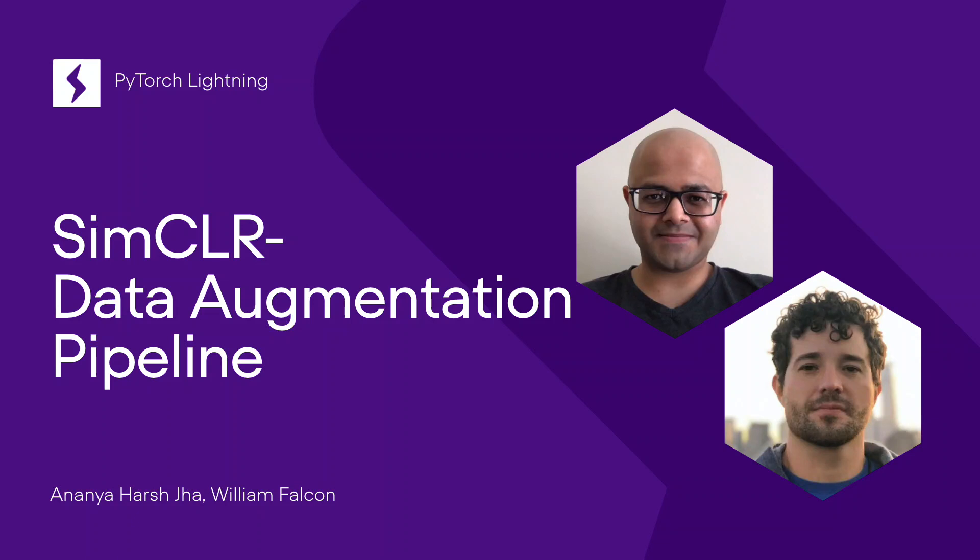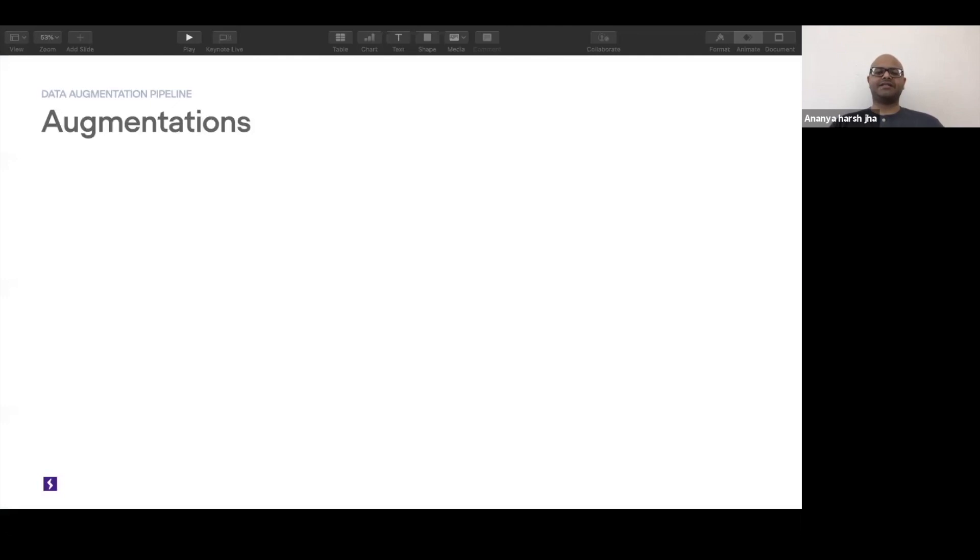So let's move on to the data augmentation pipeline in detail. What we do in augmentations is you first take an image, that's the image of a cat, and then you have three more steps.